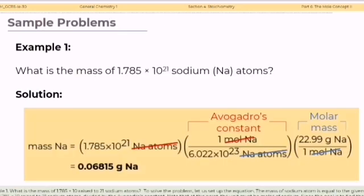Let's have sample problems. Example number 1: What is the mass of 1.785 times 10 raised to the power of 21 sodium atoms? To solve the problem, let us set the equation. The mass of sodium atom is equal to the given value of 1.785 times 10 raised to the power of 21 sodium atoms divided by the Avogadro's constant.